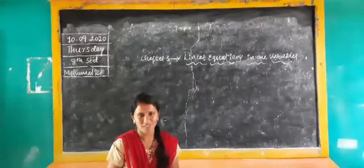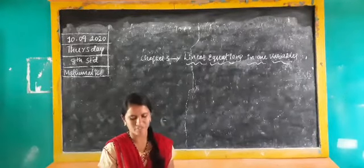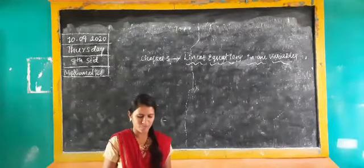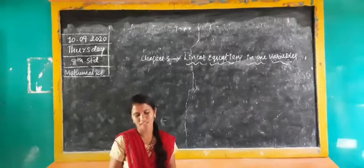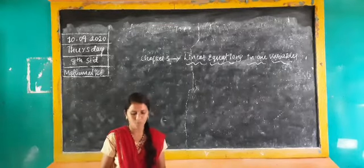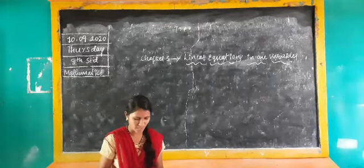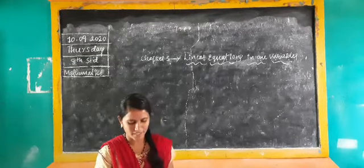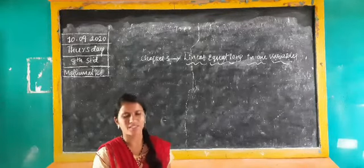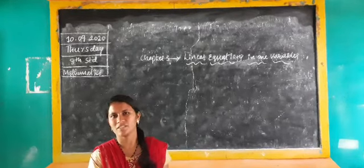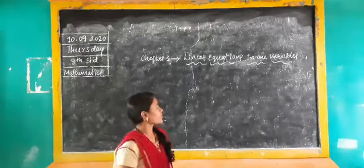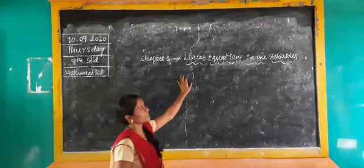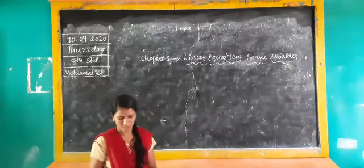Good morning, dear students. Welcome to the video class. Last class we discussed Chapter 2, Exercise 2.2 — rationalizing numbers, the number line, and everything given in that chapter. Now we move to Chapter 3: Linear Equations in One Variable.